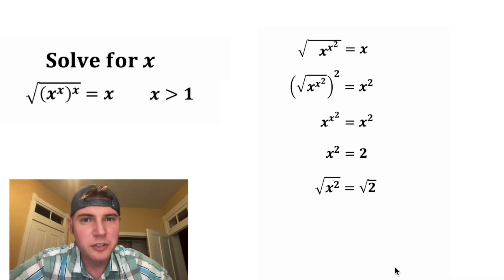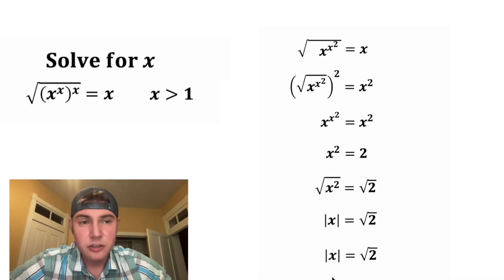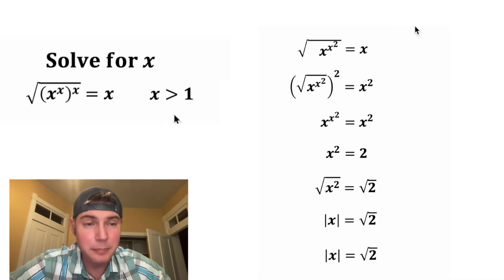And then from here, we can square root both sides. And the square root of x squared is the absolute value of x. So we have the absolute value of x is equal to square root of 2, but since we know that x can't be negative, this is just going to be x equals square root of 2.